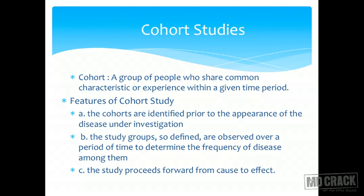If you remember the first diagram from earlier in the lecture, it involved a time dimension. We went back in time for case-control studies, and we will be going forward in time with cohort studies. The study groups are defined and observed over a period of time to determine the frequency of disease among them.